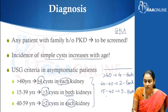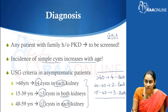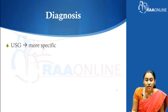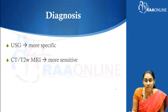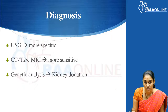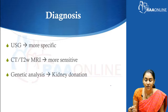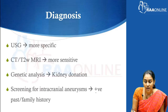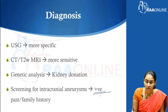To summarize the ultrasound diagnostic criteria: beyond 60 years, 4 or more cysts in each kidney; 40 to 60 years, 2 or more cysts in each kidney; and 15 to 40 years, 3 or more cysts in both kidneys. Ultrasound is more specific, however CT and T2-weighted MRI imaging are more sensitive. Genetic analysis is usually done when a patient with renal cysts plans to donate a kidney. Screening for intracranial aneurysms is not routinely recommended, but can be done in patients with a positive family or past history of subarachnoid or intracranial hemorrhage.